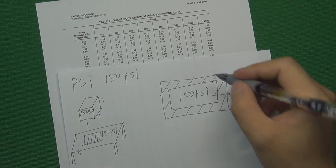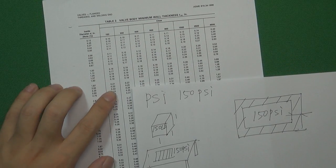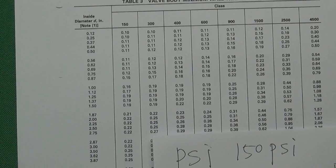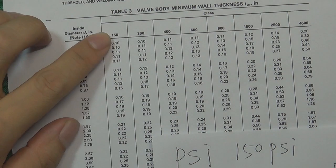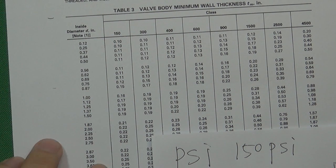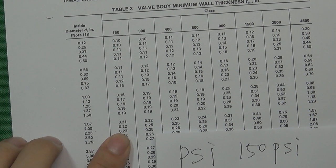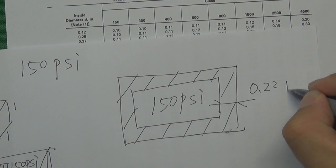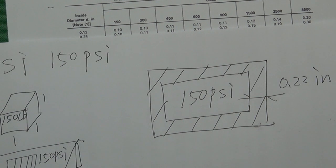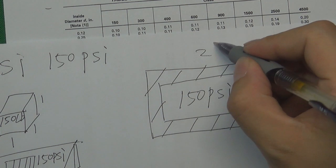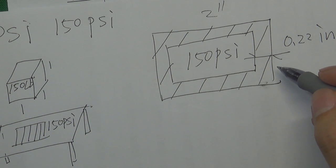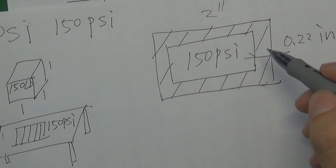So how thick does it need to be? For example, this valve is 2 inch, and the pressure class is 150. According to the valve body wall thickness table, we need at least 0.22 inch of valve wall thickness to hold the pressure. So this 2-inch valve with 0.22-inch wall thickness can hold 115 psi pressure inside.